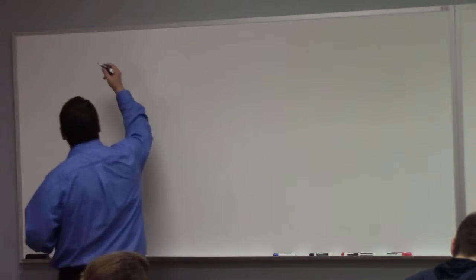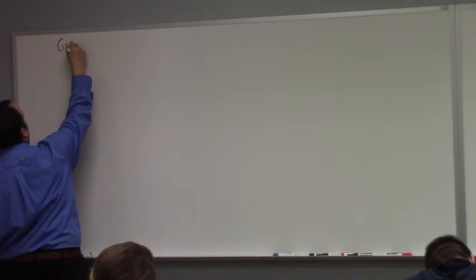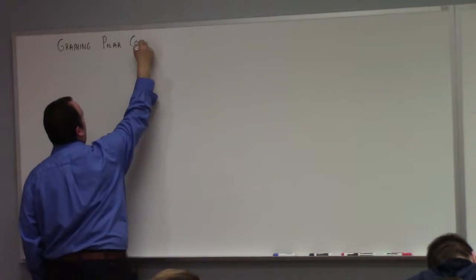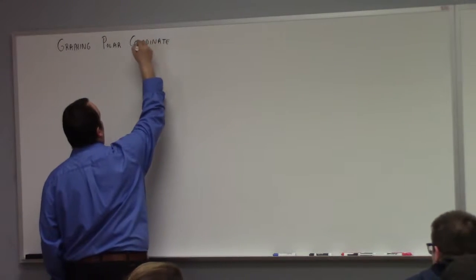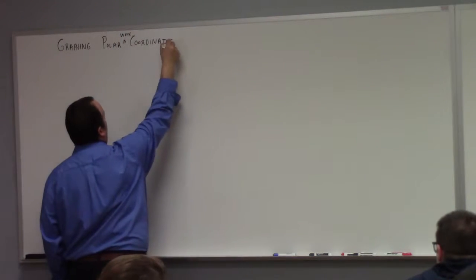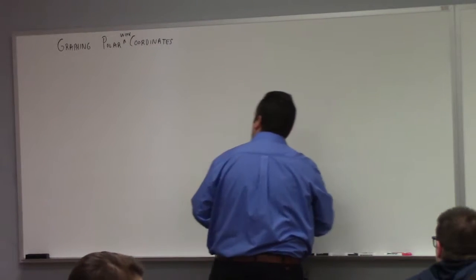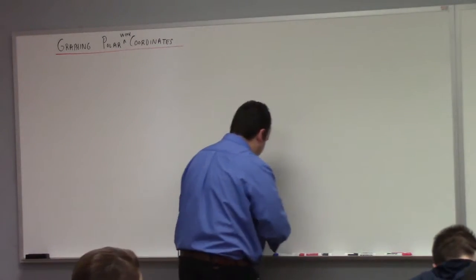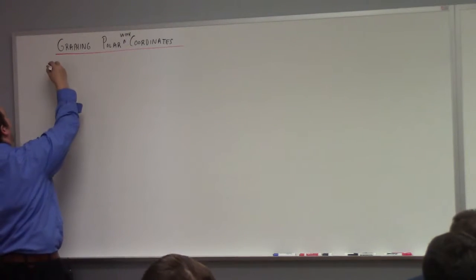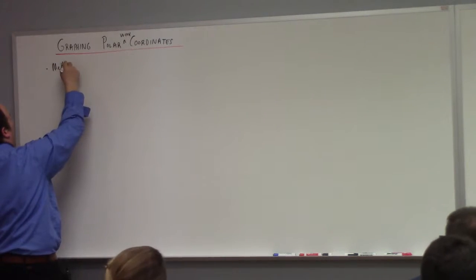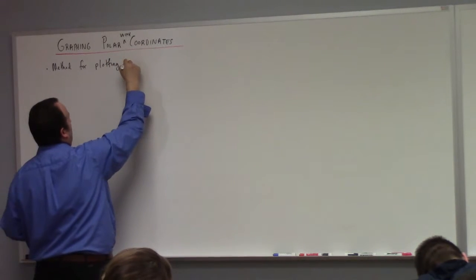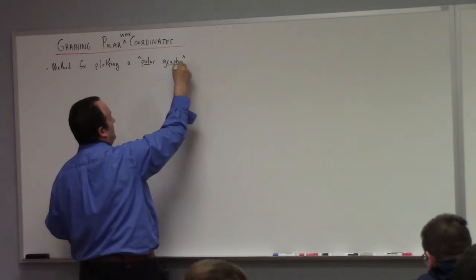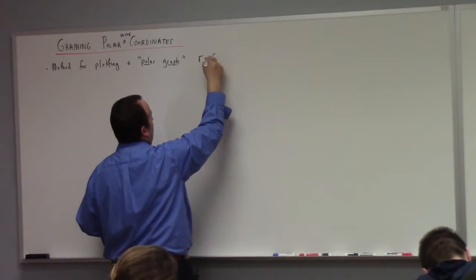All right, so I'm going to talk more about wrapping. So I did something last class, and you guys asked me, like, what did you do? How did you do that? What are those graphs that you're drawing? So I think we should go back through that again. This is the method. So I want to talk about the method for plotting a polar graph. What's a polar graph? So this is r equals to some function of theta.